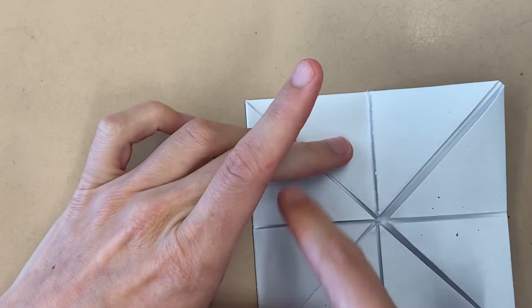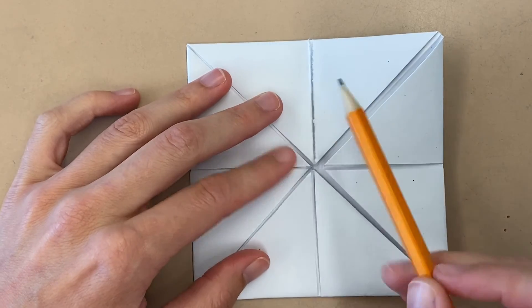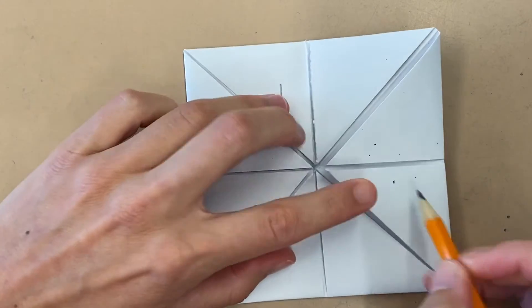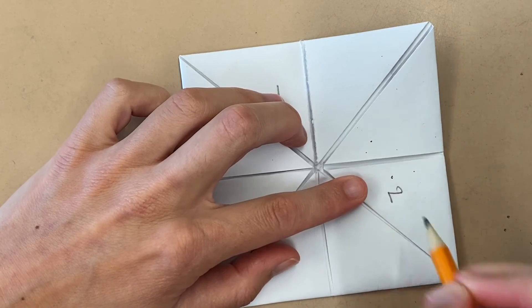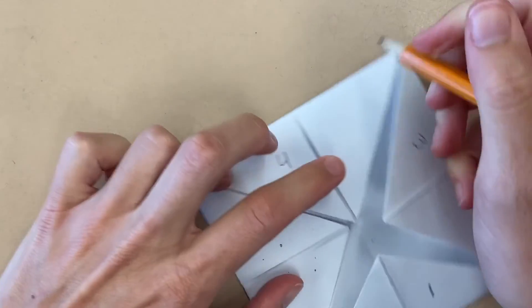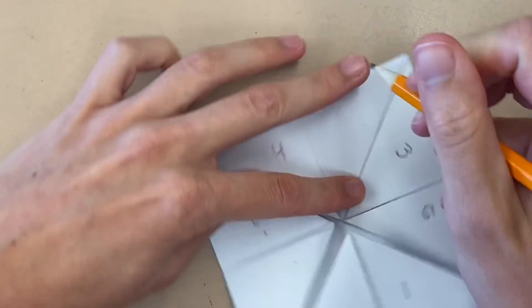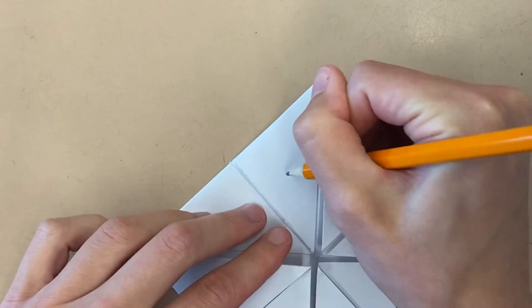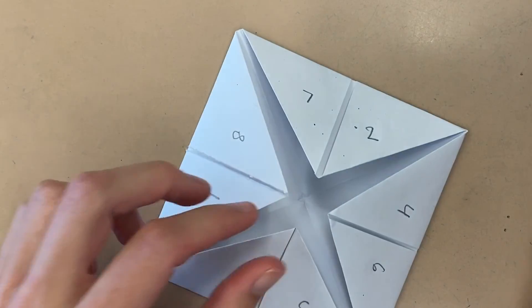You're going to put the numbers one through eight. You can do them in order. You can just do one, two, three, all the way around. I like to mix them up. So, I like to do one. Just make sure you don't repeat numbers, right? Two, three, four, five, six. You can do it in whatever order you want, but make sure you get the numbers one through eight.